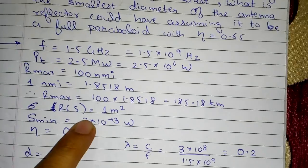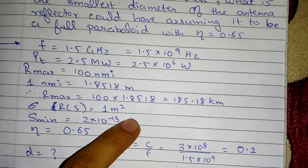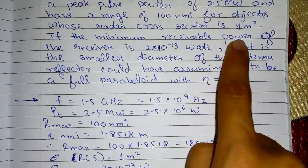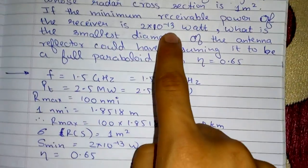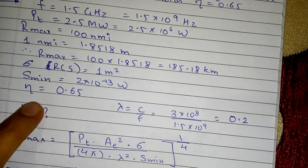So Sigma or radar cross section RCS is 1 meter square. Next we are given that minimum receivable power is 2×10^-13 watts which is Smin. And finally we are given η equal to 0.65.